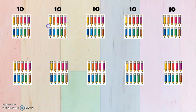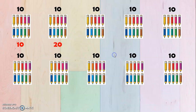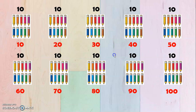Now we have here groups of pencils, and we may also use them on how we can do skip counting by 10. So we have here 10, 20, 30, 40, 50, 60, 70, 80, 90, and 100.